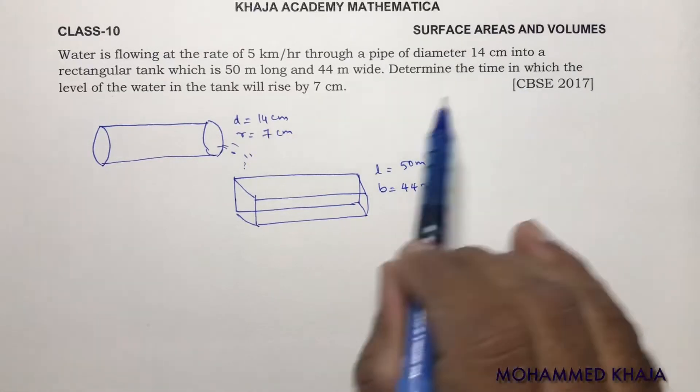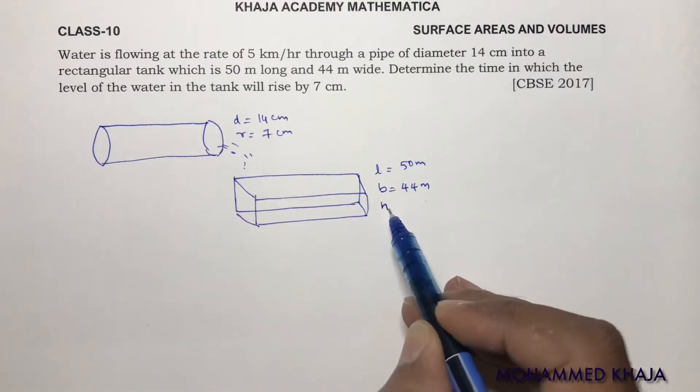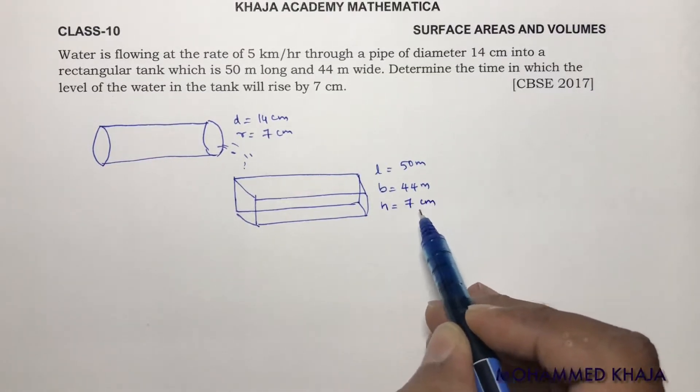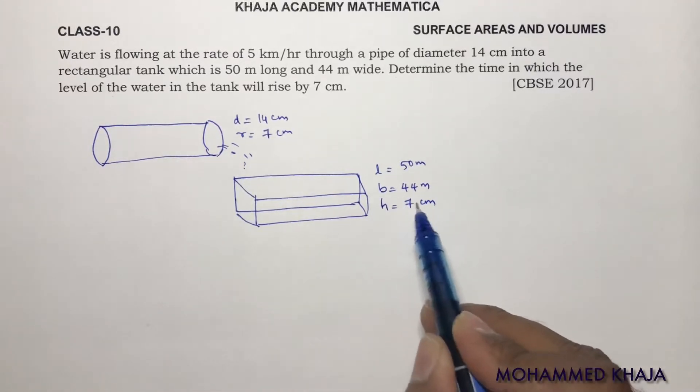Determine the time in which the level of the water in the tank will rise by 7 cm. So height is 7 cm. We need to find in how much time the water level will rise to 7 cm.